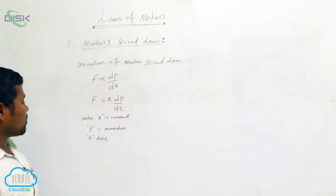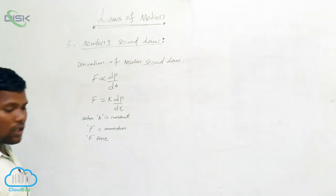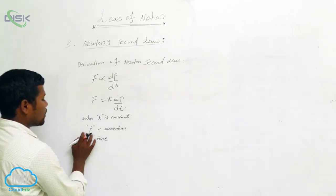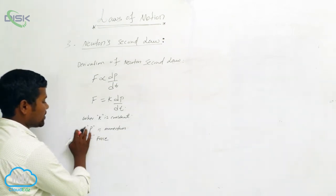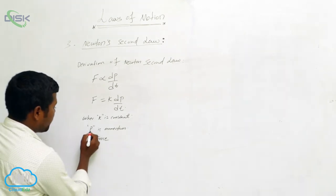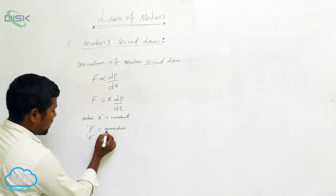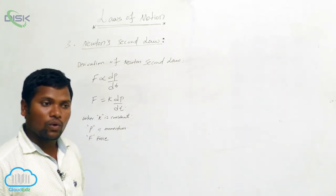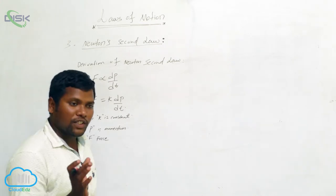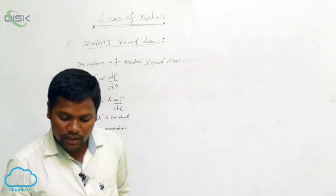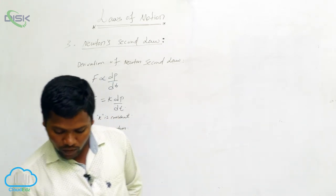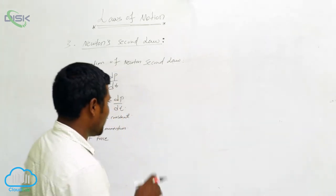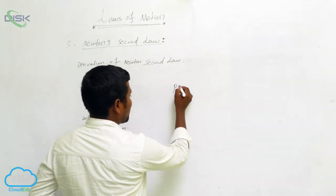Here k is the constant, p is the momentum, and F is the external force. Now I would like to explain what p is. Momentum, in general — when an object is moving from one place to another, we say it has momentum.